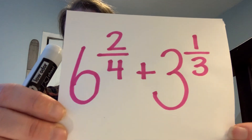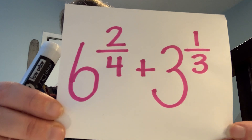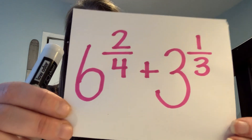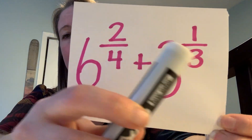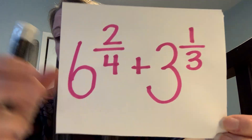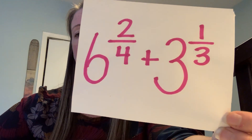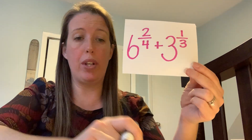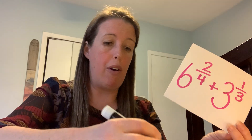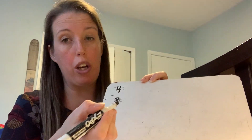We're starting with six and two-fourths, and they want us to add three and one-third. The best thing to do is first find a common denominator. I cannot add fractions that have different denominators, so I need to rename these fractions by giving them a common denominator. I'm going to write down my multiples of four and my multiples of three, starting with four and three.